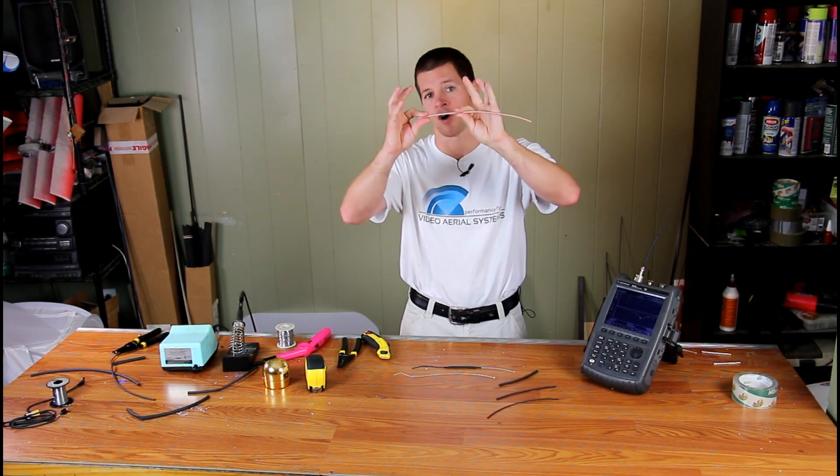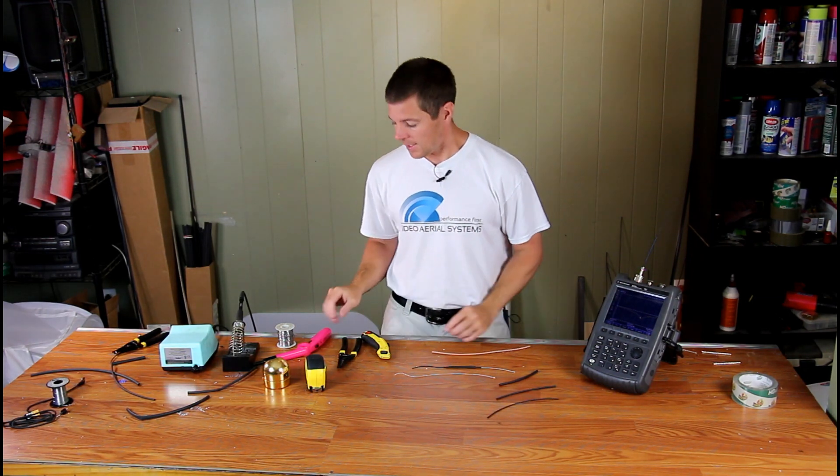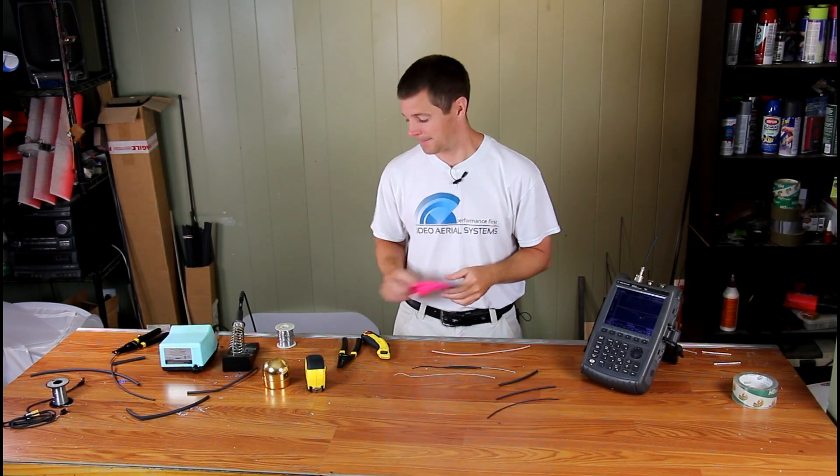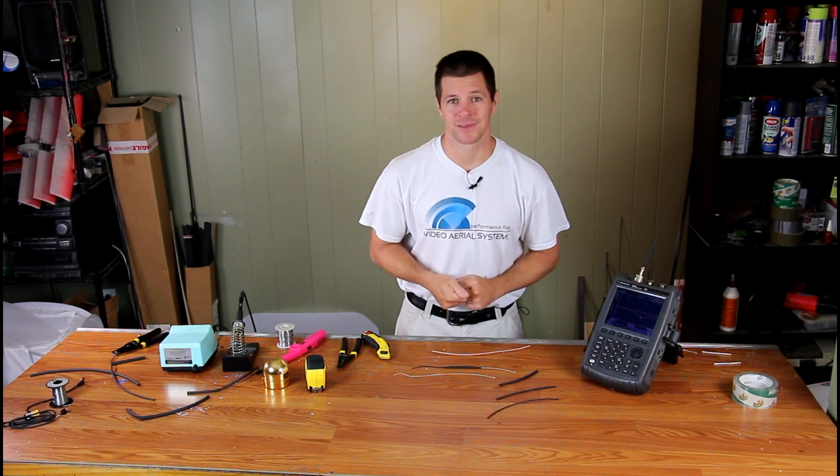So we are going to use RG142 like the previous video and then of course some way of shrinking up your heat shrink tubing such as a lighter. So with that on to the construction.